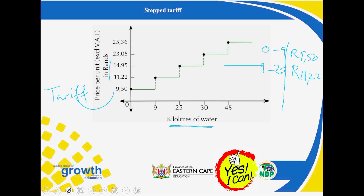These are the tariffs, and these represent the usage. We have block one, block two, then block three, which covers twenty-five to thirty kilolitres, charged at fourteen rand ninety-five cents per kilolitre.